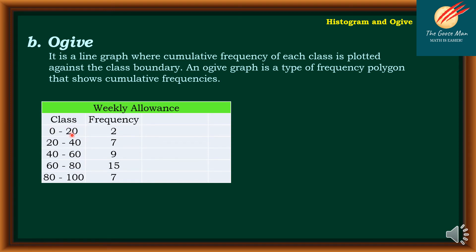Take note that in our intervals, 20 is the upper limit of 0 to 20, 40 is the upper limit of 20 to 40, 60 for 40 to 60, 80 for 60 to 80, and 100 as the upper limit of 80 to 100. Next, we consider the class mark. To get the class mark, we get the average: 0 plus 20 equals 20, divided by 2 equals 10. Similarly, 20 plus 40 equals 60, divided by 2 equals 30. Continuing, the class marks are 50, 70, and 90 for ranges 40 to 60, 60 to 80, and 80 to 100 respectively.